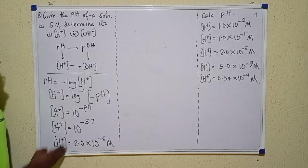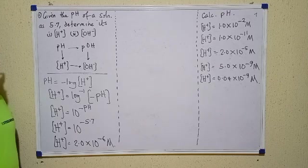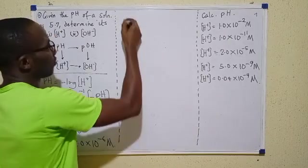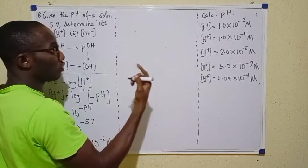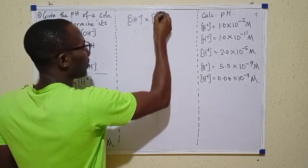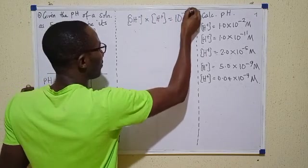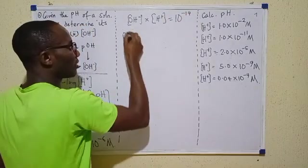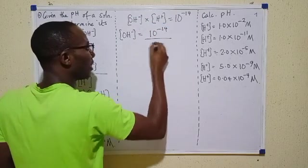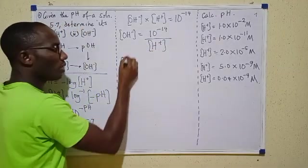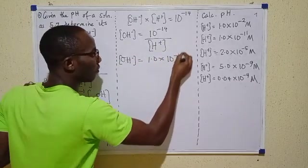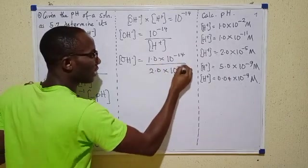Having gotten H⁺ and answered question 1, there's question 2 left, which asks for the OH⁻ concentration. From a previous formula — and if you haven't watched the previous videos on pH please do — we said OH⁻ concentration times H⁺ concentration equals 10⁻¹⁴. So OH⁻ concentration becomes 10⁻¹⁴ divided by H⁺ concentration, which is 1.0 × 10⁻¹⁴ over 2.0 × 10⁻⁶.